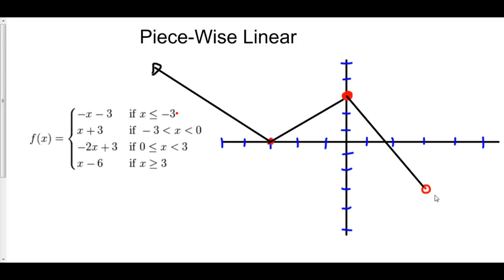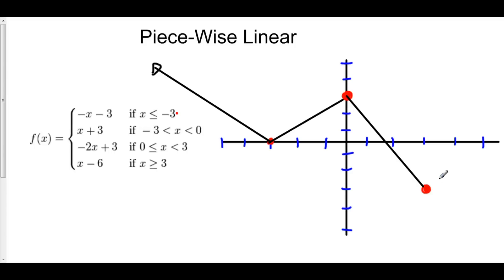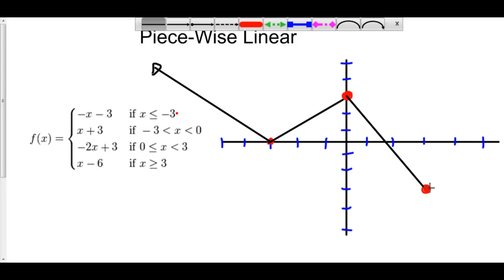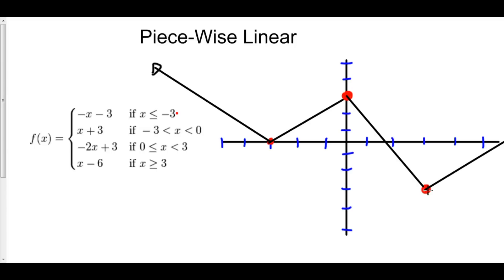For the final part, let's look to the right of 3. We start at x equals 3: 3 minus 6 is negative 3. We can fill in this point — 3 comma negative 3. And now we have a slope of positive 1, so we go up 1 over 1, and this line continues upward to the right.